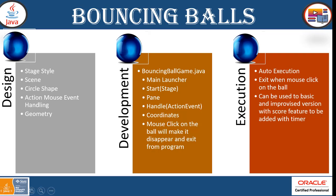The requirement is: when you click on the ball, it will disappear and exit from the program. The geometry is the same — coordinates and x-axis and y-axis are sent as arguments from the constructor. The ball moves randomly, and when the mouse clicks on the ball, it will exit. Development: BouncingBallGame.java is the only main class with a main launcher. The start method is overridden passing a stage argument. A pane is created, action events are handled, and mouse click on the ball makes it disappear and exit.